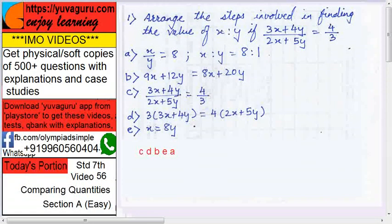x upon y equals to 8 upon 1, so x is to y equals to 8 is to 1. This is the required answer: c, d, b, e, a.